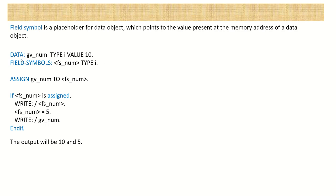Consider this demo program. Here I am declaring one variable: 'data GV_name type i' — GV_name is the variable name of type i, that is integer, and I am assigning a default value of 10. In the second line, to declare the field symbol, we cannot use 'data'. We have to use the keyword 'field-symbols' and then inside the less-than and greater-than signs, give a name for that field symbol. After that we mention the type — here I am declaring it as type i, so this is a typed field symbol.